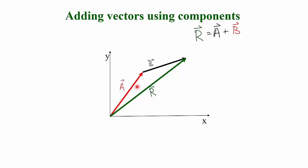I line the first vector up, vector A, and I place the tail of vector B at the tip of vector A. Then my resultant vector points from the tail or the start of the first vector to the tip or the end of the last vector. We're saying that vector R is equivalent to vectors A and B put together.